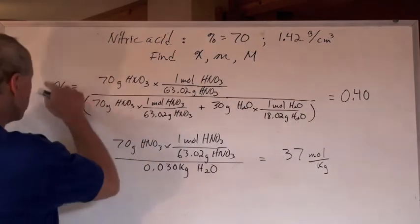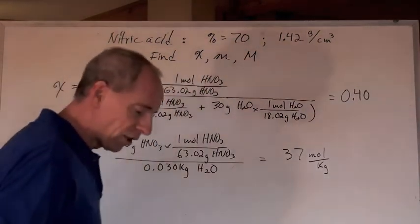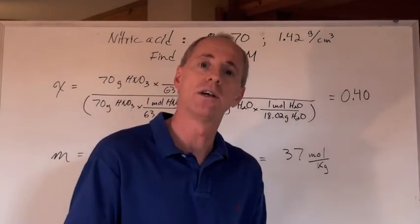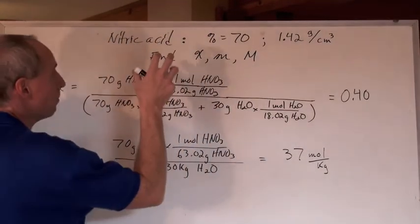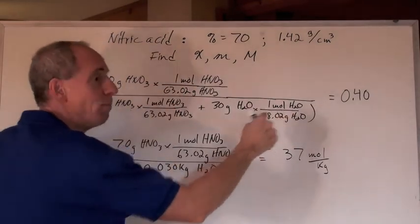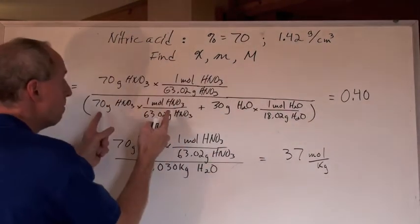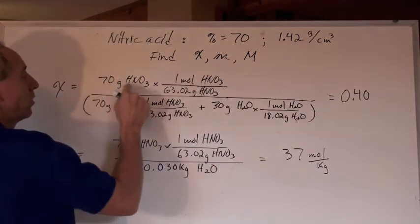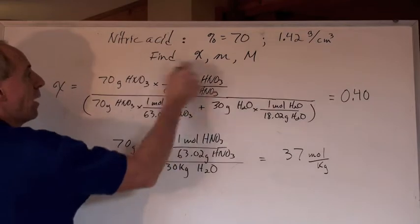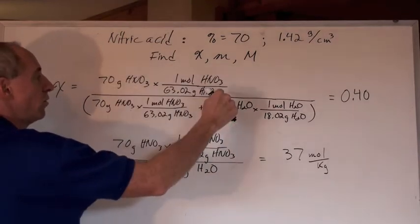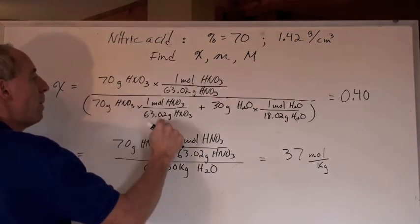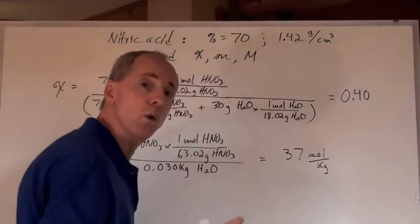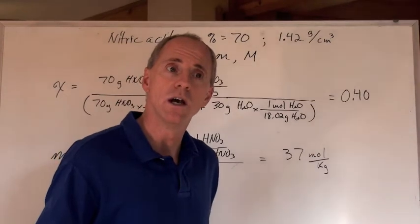For the mole fraction, we have to convert the mass of both the solute and the solvent into moles. Then it's the moles of the solute divided by the moles of solution, which is the moles of the solute plus the moles of the solvent. I took the grams of HNO3 divided by the molar mass to get moles. Moles of solute divided by moles of solute plus moles of solvent.